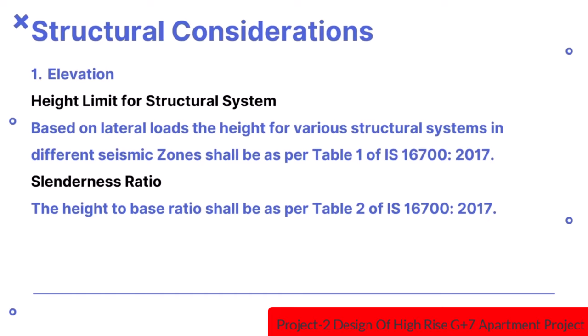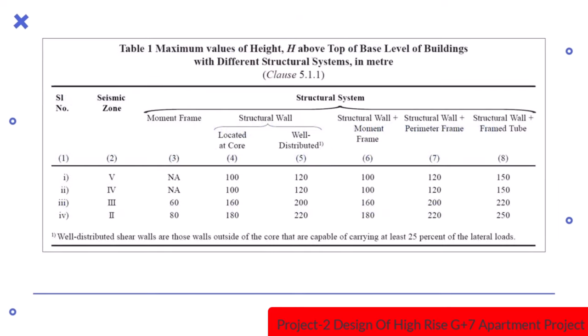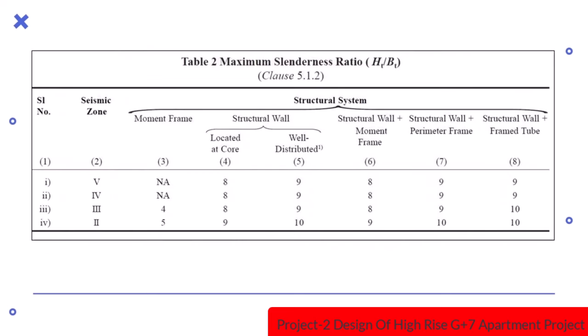The height to base ratio shall be as per table number 2 of the same IS code. Table number 1 gives maximum value of height above top of base level of buildings with different structural systems. Table number 2 gives maximum slenderness ratio according to the seismic zones.